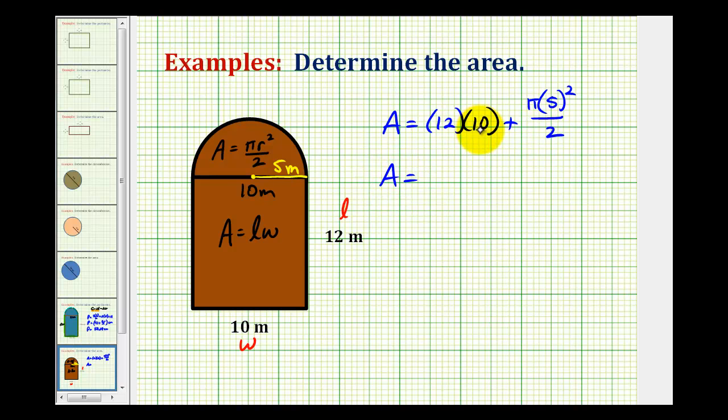So our area is going to be equal to, this will be 120, plus this will be 25 pi over two, or 25 pi halves. And again, this would be meters squared.